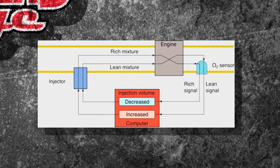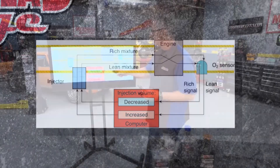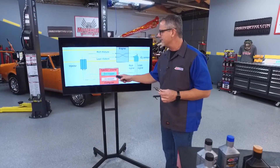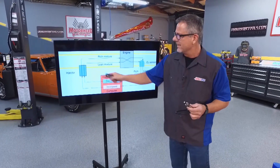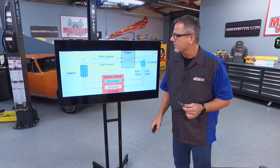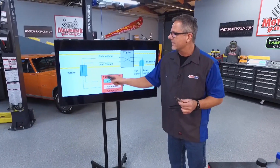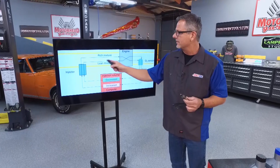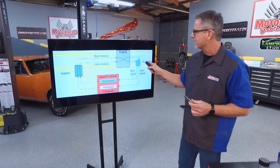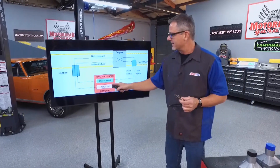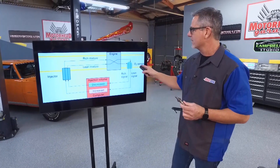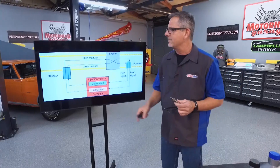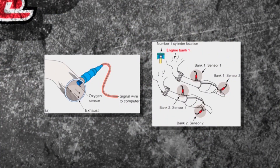The signal goes to the computer, which will either increase or decrease the volume of the injector — that's the actual command. It commands them to go lean, the oxygen sensor says we're lean; it commands it to go rich, the oxygen sensor says we're rich, and it just keeps shifting back and forth.